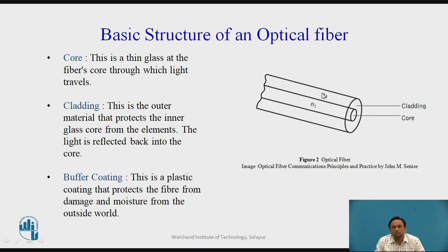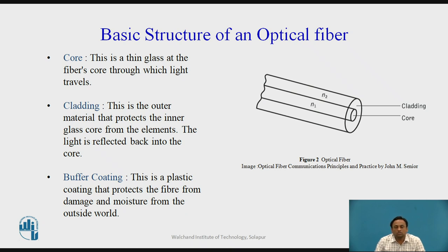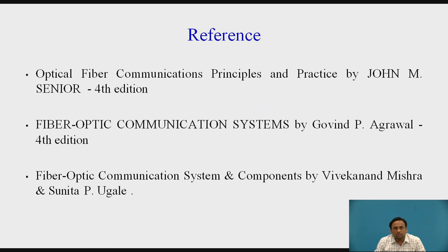The cladding is the outer material that protects the inner glass core and reflects light back into the core, ensuring light stays within the core. There are two refractive indices: n1 and n2 — one for air and one for glass — representing less dense and denser media respectively, following the laws of reflection and refraction. There is also a buffer coating, typically black in color, which is a plastic coating that protects the fiber from damage and moisture from the outside world.